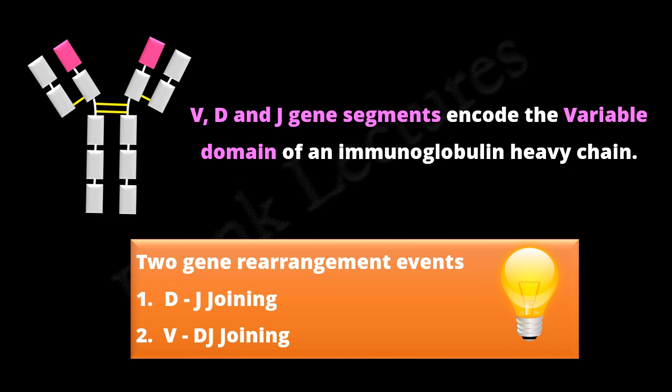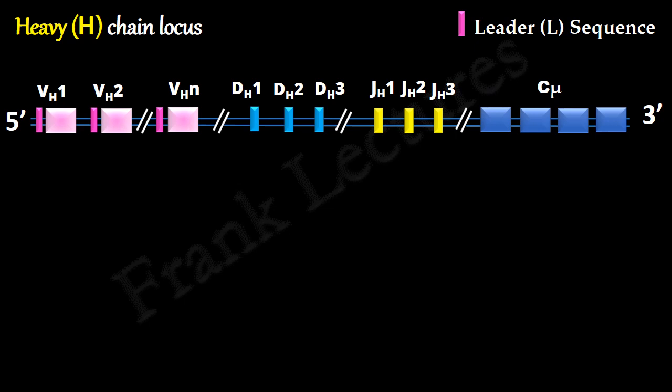Let's understand this in detail. This is heavy chain locus. We are only showing the C mu gene. As we know, mu heavy chain has 4 constant domains. So we are representing C mu gene in the form of its 4 sub exons.